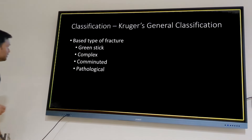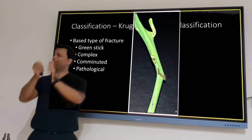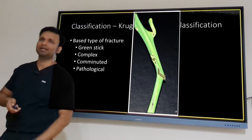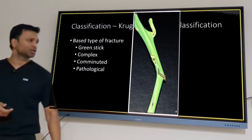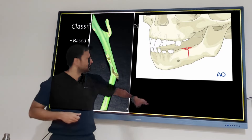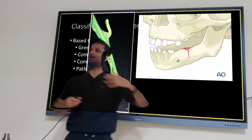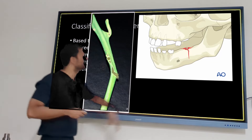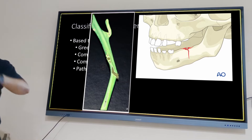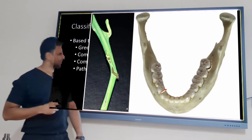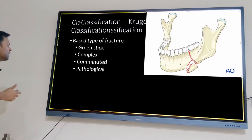A greenstick fracture is like bending a green stick — it doesn't break completely. In young patients or children, the bone is very elastic, so when force is applied only one cortex fractures and the other remains intact. Typically in children you see the lingual cortex fracture while the buccal cortex is fine — it is always an undisplaced incomplete fracture.